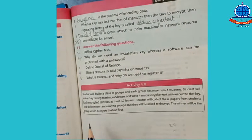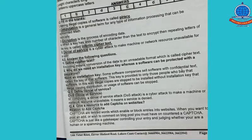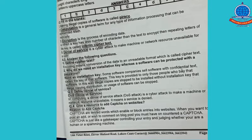Answer the following questions. Number 1: Define cipher text. Encoding means conversion of data to an unreadable format, which is called cipher text. When we encode data into an unreadable format that no one can understand, it becomes a secret message that no unknown or unrelated person can read. That text is called cipher text.